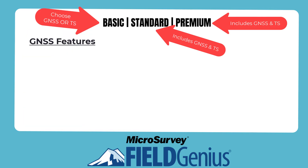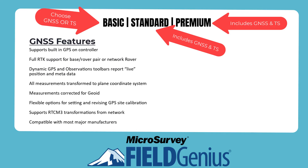GNSS features include: supporting built-in GPS on the controller; full RTK support for base-rover pair or network rover; dynamic GPS and observation toolbars that report live position and metadata; all measurements transformed to a plane coordinate system; measurements corrected for geoid; flexible options for setting and revising GPS site calibration; supporting RTCM3 transformations from network; and compatibility with most major manufacturers.